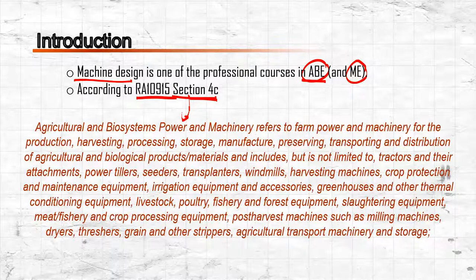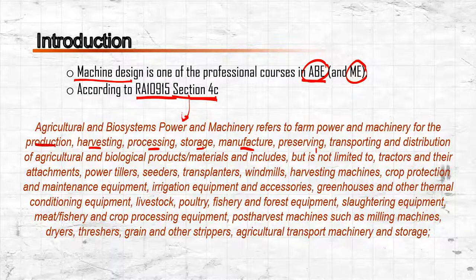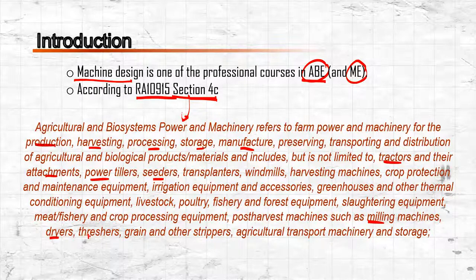Section 4C defines what it means to say agricultural and biosystems power and machinery. It refers to farm power and machinery for the production, harvesting, processing, storage, manufacture, transportation, and distribution of agricultural and biological products. This includes but is not limited to tractors and their attachments, implements, seeders, milling equipment, dryers, and threshers.